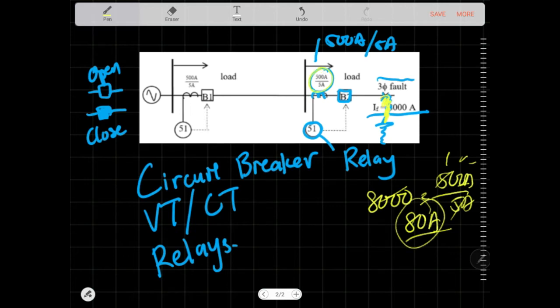So, the current transformer is only reading. It's like your eyes. Your eyes and your ears. It only reads. It doesn't know what's happening. This will send a signal. The reading will be passed on to this. It's called a relay. A relay, I think 51 is what I call overcurrent relay.